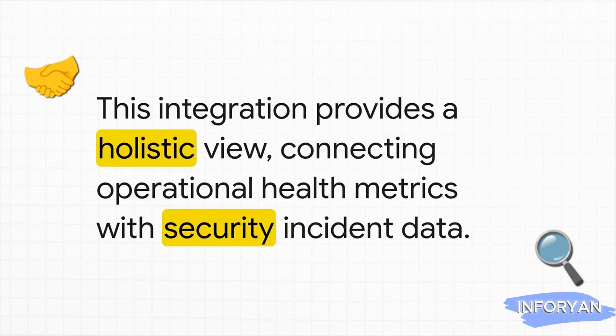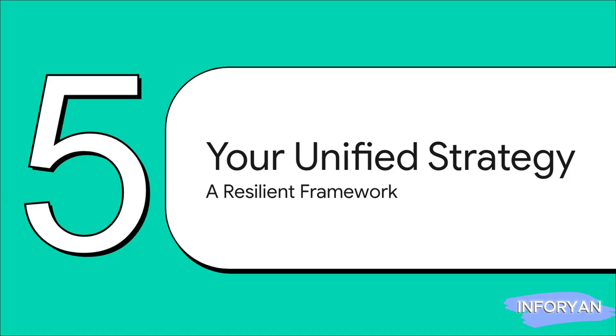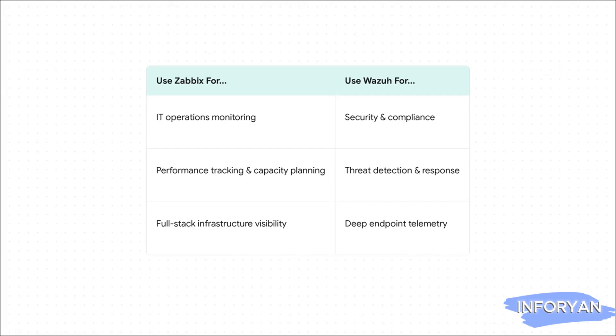This integration completely shatters the walls that usually stand between your operations and security teams. The ops team knows what is happening — the server is slow — and the security team knows why it's happening — because of a suspicious process. All of a sudden everyone has the complete story. So how do you build an actionable, resilient strategy for your own company? Here's your blueprint: use Zabbix for what it's great at — top-to-bottom IT operations monitoring and performance tracking. Use Wazuh for what it's great at — deep security analysis, threat detection, and compliance. By letting each tool play to its strengths, you get a layered strategy that covers all your bases.